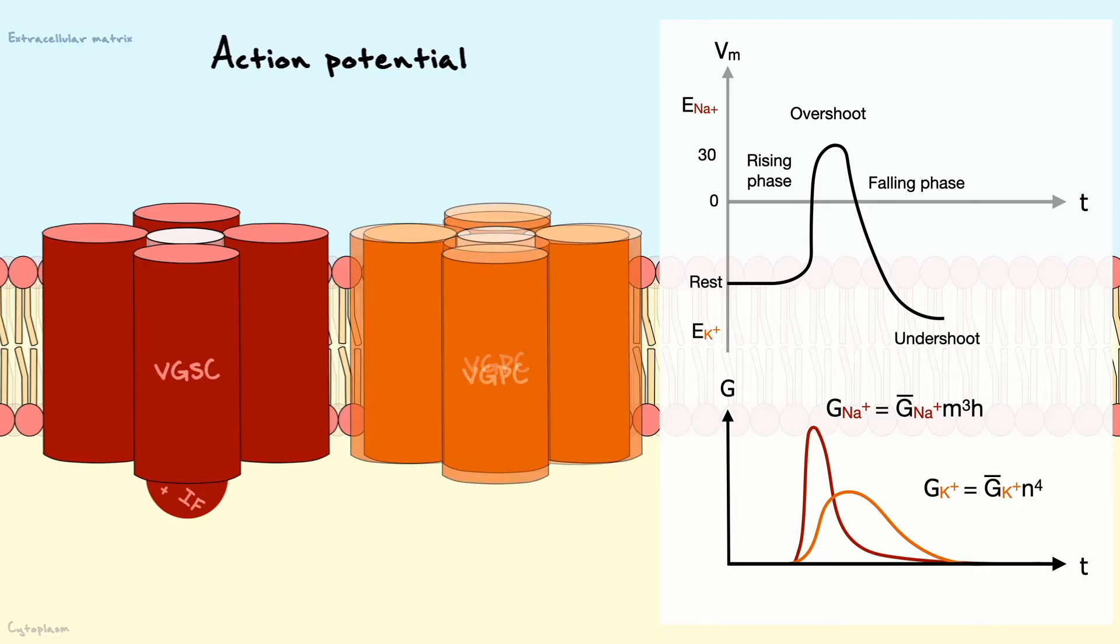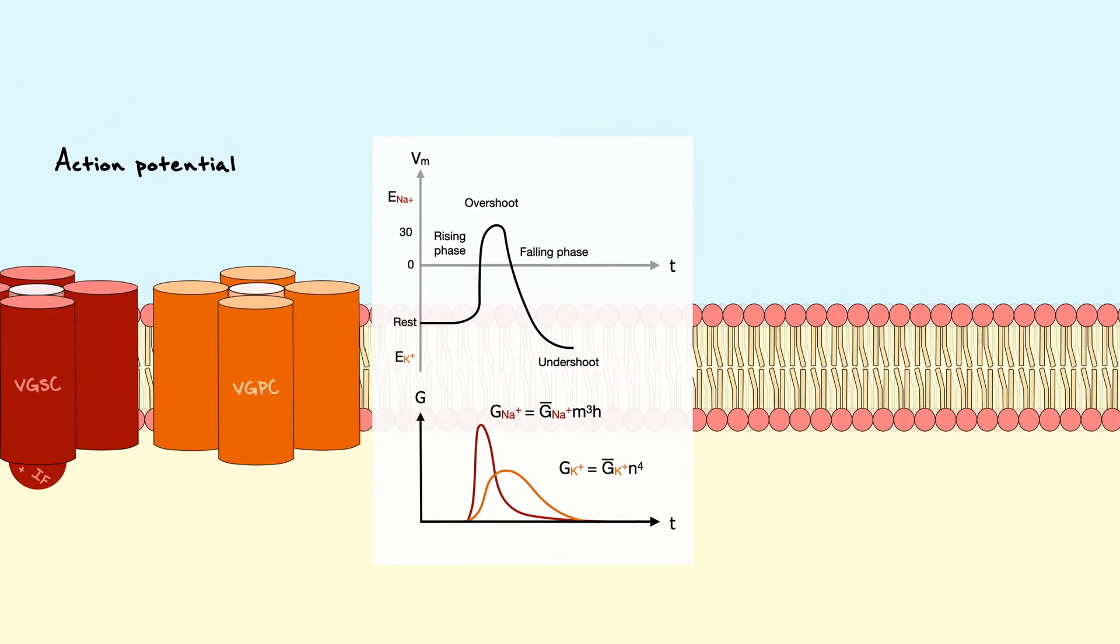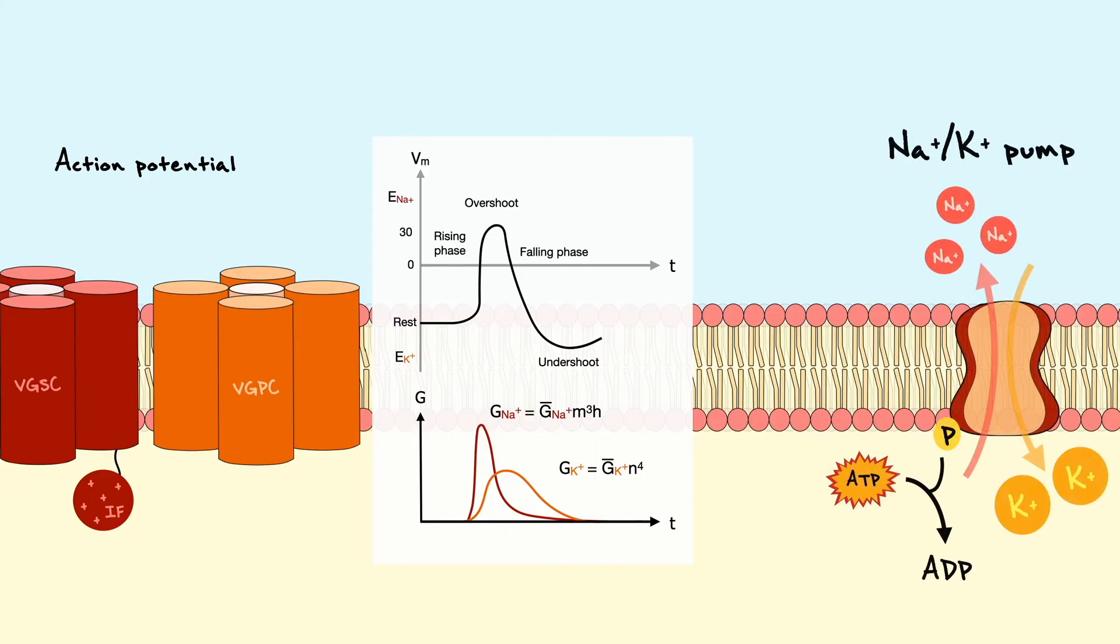The negative potential in the undershoot is then corrected by the sodium-potassium pump that reestablishes the gradient that sets the resting membrane potential. One key factor of the action potential that I haven't mentioned is the threshold in voltage that triggers it. The threshold is a very interesting property because a fraction of a millivolt can be the difference between generating an action potential or not.